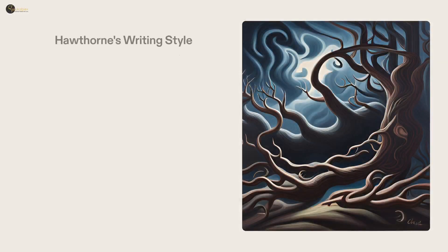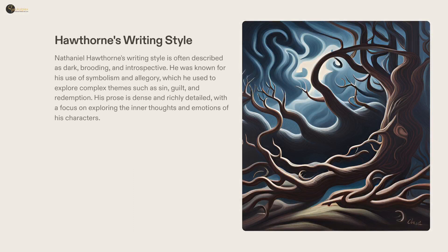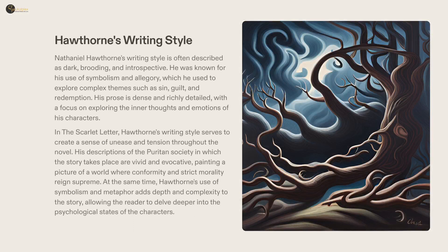Nathaniel Hawthorne is renowned for his writing style, which was often described as dark, brooding, and introspective. He explored complex themes such as sin, guilt, and redemption through his use of symbolism and allegory. Hawthorne's prose was rich with detail, delving into the inner thoughts and emotions of his characters. In The Scarlet Letter, Hawthorne's writing style sets an atmosphere of unease and tension. His vivid descriptions of the Puritan society demonstrate the oppressive, conformist, and moral world the characters inhabit, while his use of symbolism and metaphor adds complexity to the story, allowing readers to gain a unique insight into the psychological states of his characters.